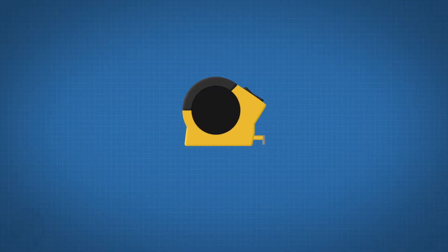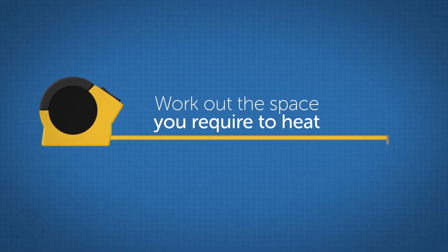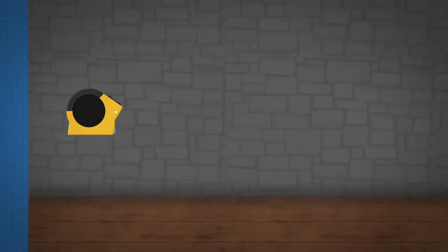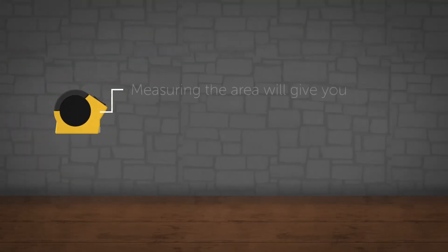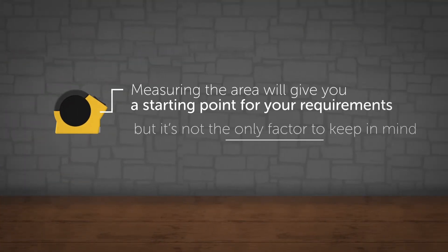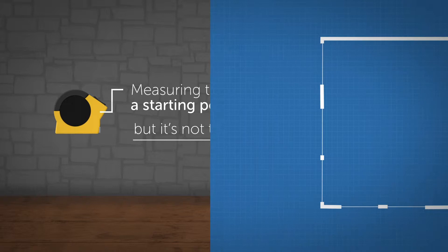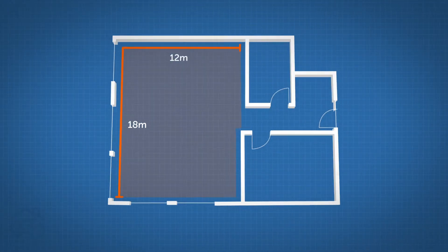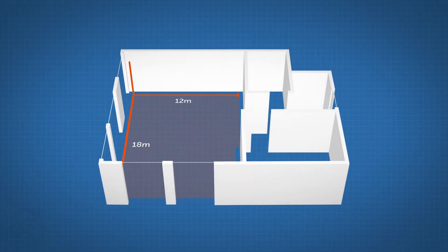The first step is to work out the space you require to heat. Measuring the area will give you a starting point for your requirements, but it's not the only factor to keep in mind. Make sure you know the size of the room or rooms you want to heat, as well as the ceiling heights.